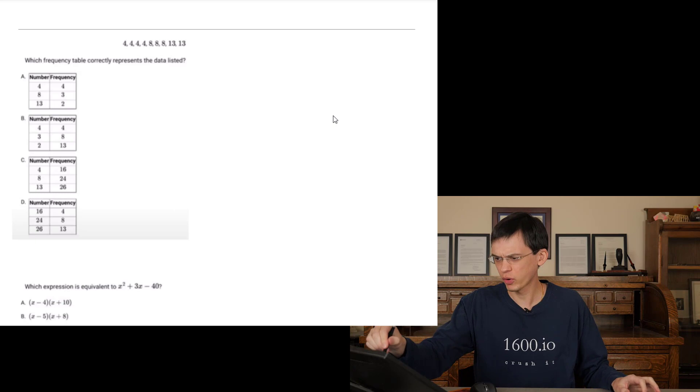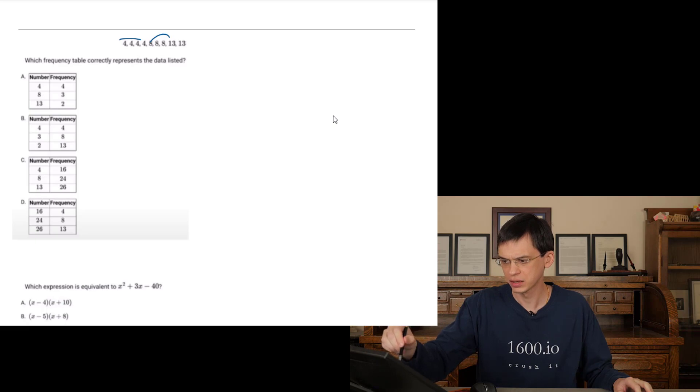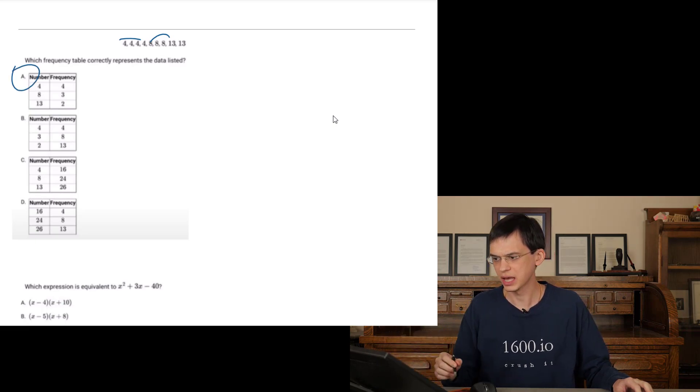Frequency table. There's four fours here. A and B check out. And then there's three eights. Frequency three eight. The answer is gonna be A.